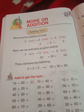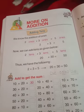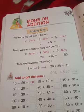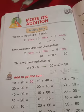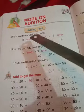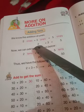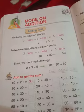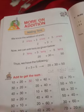Understand? Thus we have the following: two plus three equals five, twenty plus thirty equals fifty. Means ones means no zero, tens means one zero. Understand?